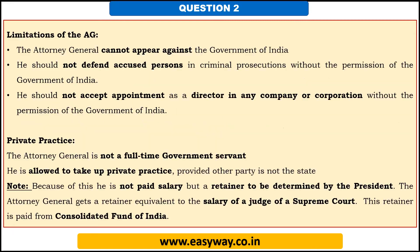Regarding limitations: if the Attorney General is required to represent the government of India, he cannot appear against the government of India. He should not defend accused persons in criminal prosecutions without the permission of the government of India. He also cannot accept any appointment in any company or corporation without the permission of the government of India. Regarding private practice — he is not a full-time government servant, so he can take private practice, but in that case the government of India should not be a participant.